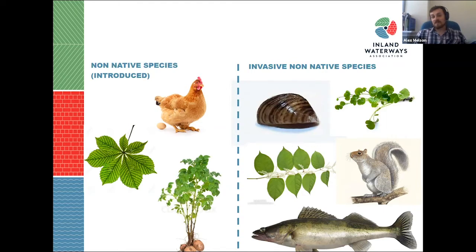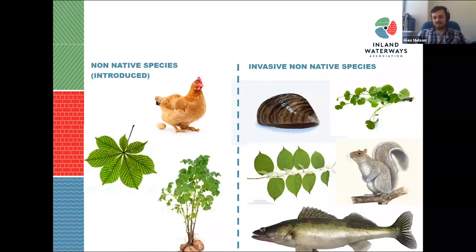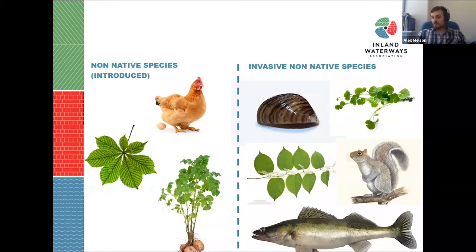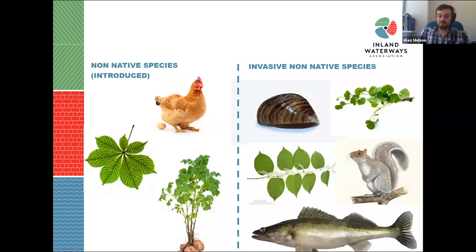On the right we have our invasive non-native species — some of you may recognise these already: the zebra mussel, the floating pennywort, Japanese knotweed, the grey squirrel, and zander. These are species able to vigorously invade an area and cause massive damage. There's also a grey area — buddleia, for example: if you love butterflies you'll see it as an amazing species, but if you work on the railways you'll know it as a massive pest.